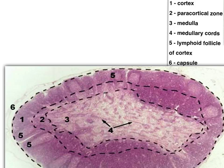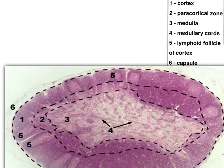Area 1 is the cortex. Area 2 is the area between the cortex and the medulla — the deep part of the cortex — which is the paracortical zone containing T lymphocytes coming from the thymus through the post-capillary venules. Area 3 is the medulla. Number 4 structures are the medullary cords. Number 5 are the lymphatic follicles with germinal centers. Number 6 is the capsule of the lymph node.